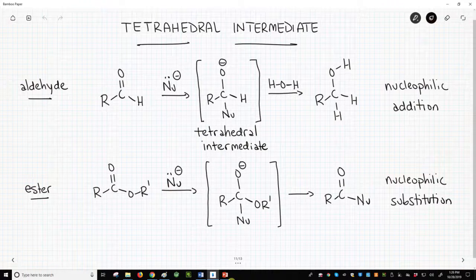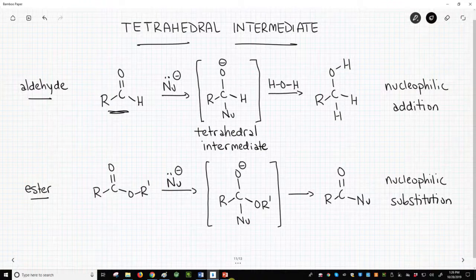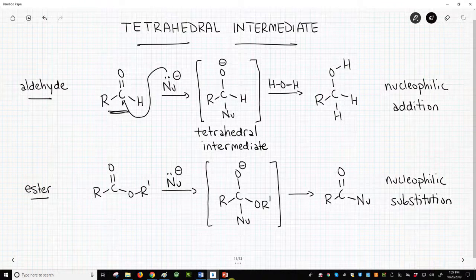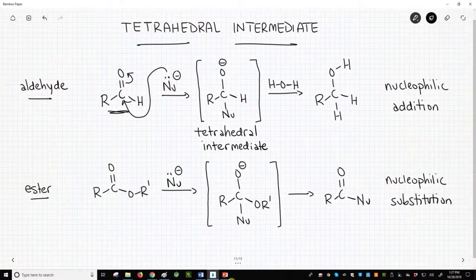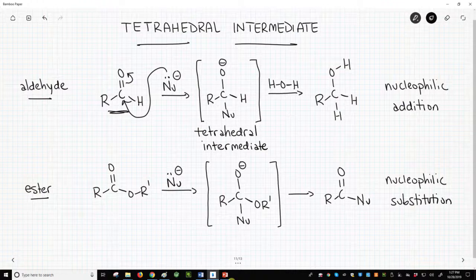So let's assume we have an aldehyde. We're on the top left. The carbonyl, a weak electrophile, can be attacked by a strong nucleophile. The nucleophile attacks. The carbon breaks the pi bond and pushes the electrons on oxygen to make an anion. The anion in the middle of the screen has a special name – the tetrahedral intermediate.